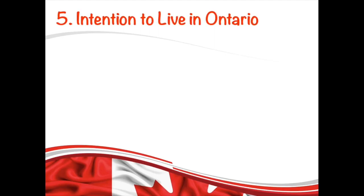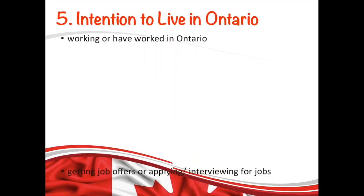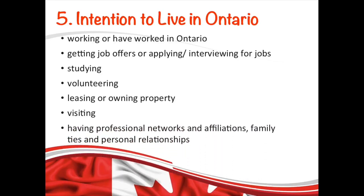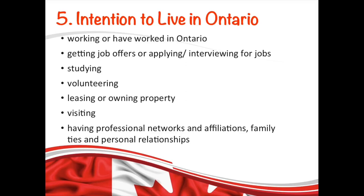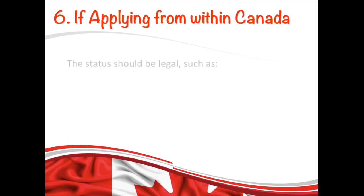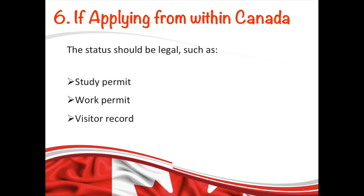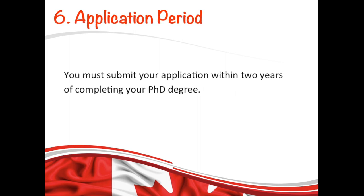You must also show your intention to live in Ontario after your PR is approved. There are several factors on which they will determine your intentions. If you are applying from within Canada, your status should be legal — it could be a visitor record, study permit, or work permit — and you must maintain that status until the time of nomination. You must also submit your application within two years of completing your degree.